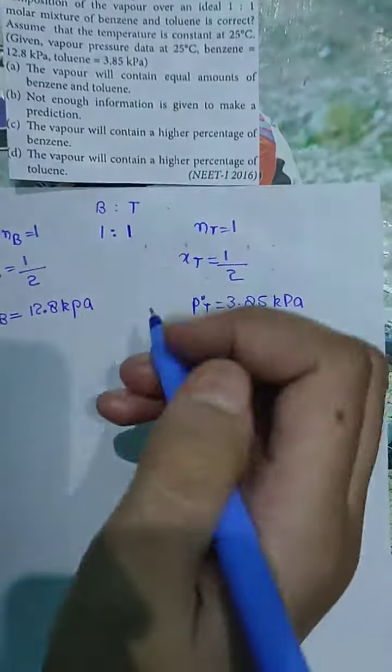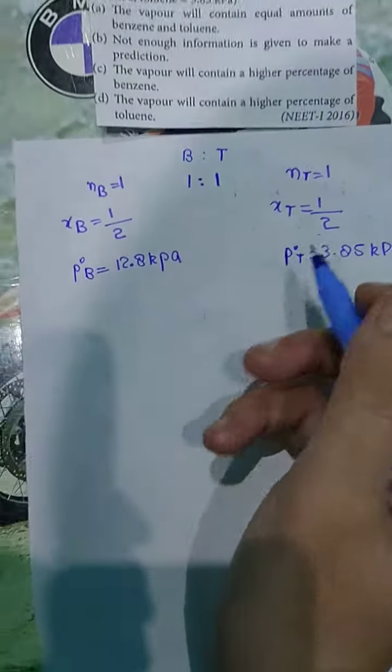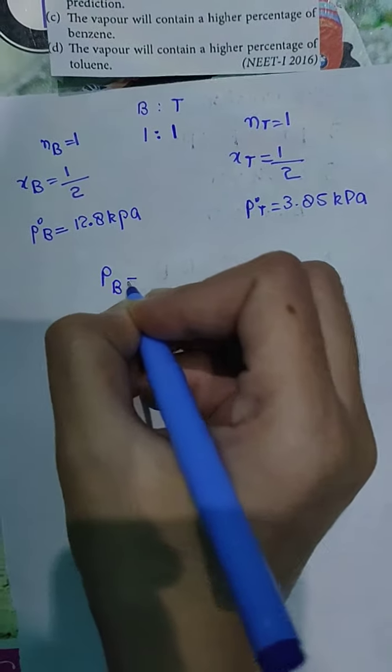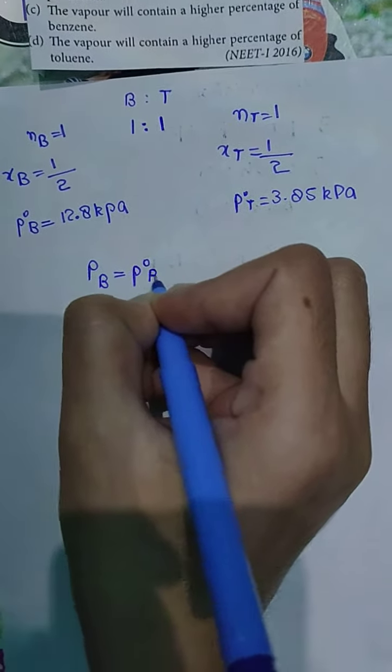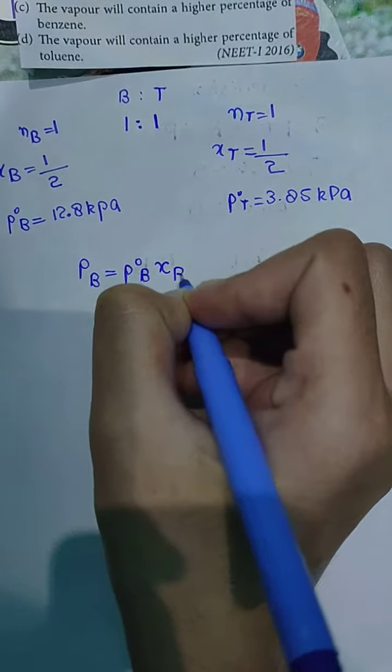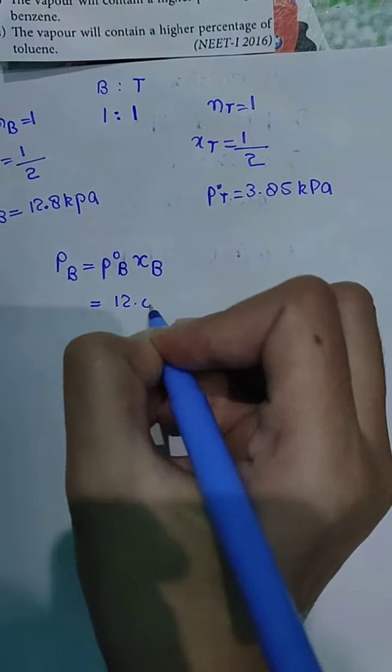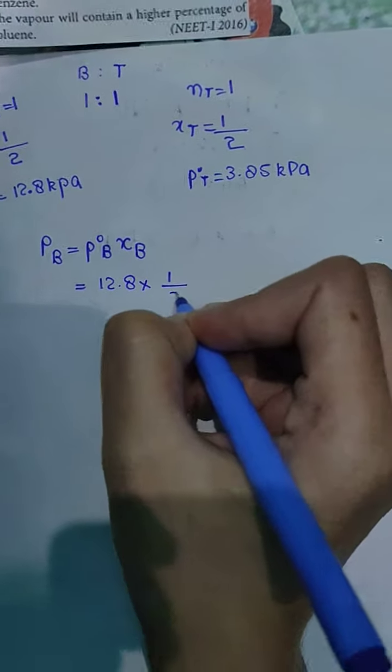Now we have to calculate which percentage will be more in the vapor. We have to find vapor pressure. Vapor pressure exerted by benzene is equal to vapor pressure of pure component into mole fraction.